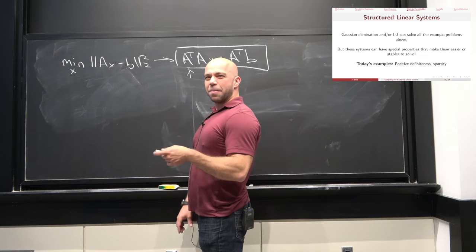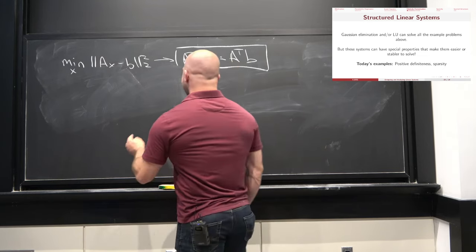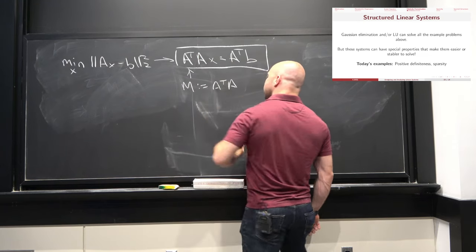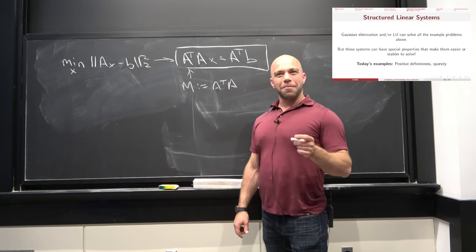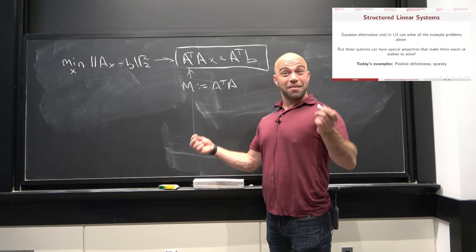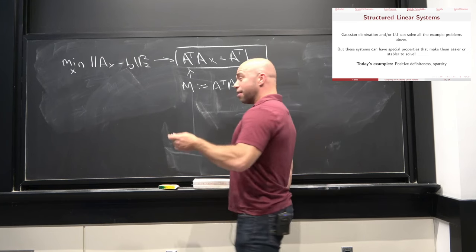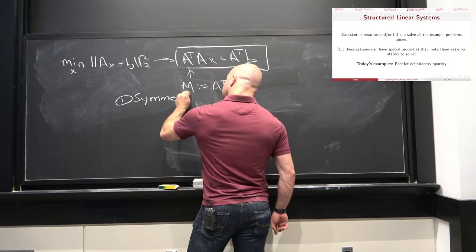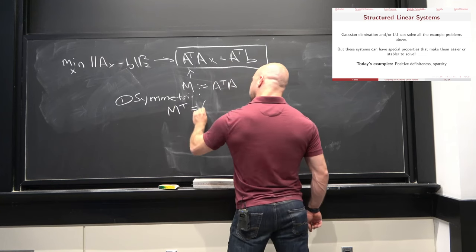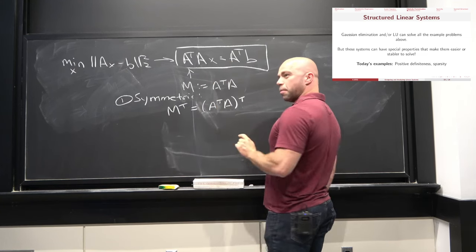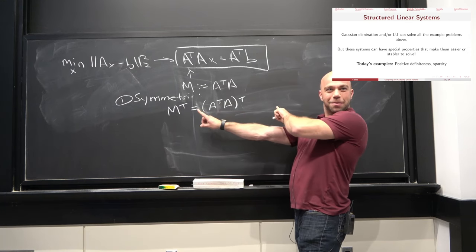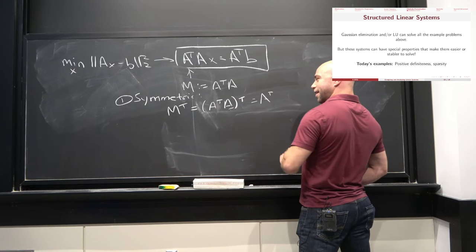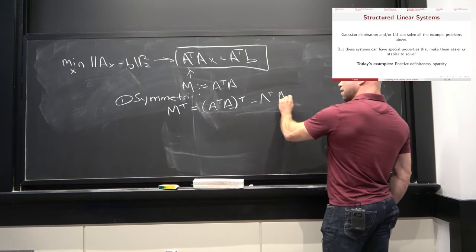The examples we saw last time were systems that are positive definite and sparse. Let's justify that A^T A is positive definite and symmetric. Let's make a matrix M = A^T A. I claim that M satisfies two very important properties. First, M is symmetric — because M^T = (A^T A)^T = A^T (A^T)^T = A^T A = M. Victory!